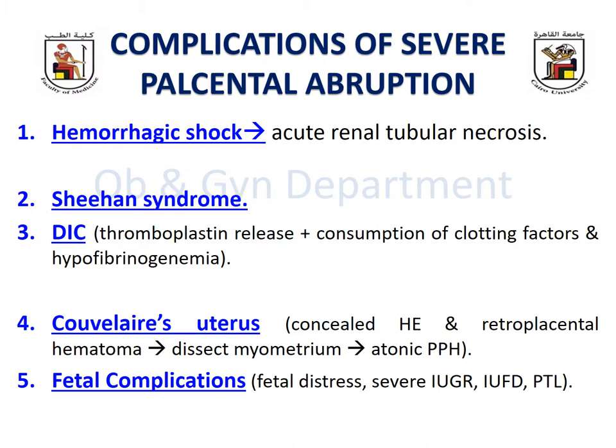Regarding complications of placental abruption: these cases are more prone to severe obstetric hemorrhage and may progress very rapidly to late stages of shock — both hemorrhagic shock from severe bleeding and neurogenic shock from pain. Complications of hemorrhagic shock include acute renal tubular necrosis: severe hemorrhage and shock lead to renal vasospasm from hypovolemia, compounded by the hypertensive state of pregnancy, resulting in renal tubular necrosis. Bilateral tubular necrosis is reversible, but progression to bilateral cortical necrosis is irreversible.